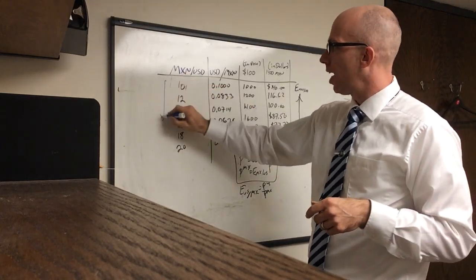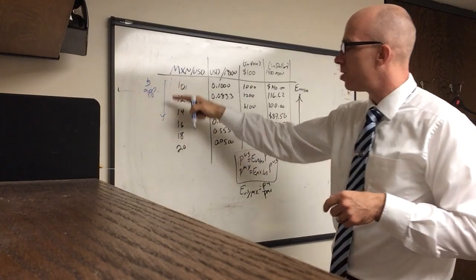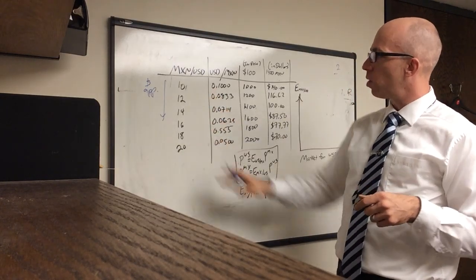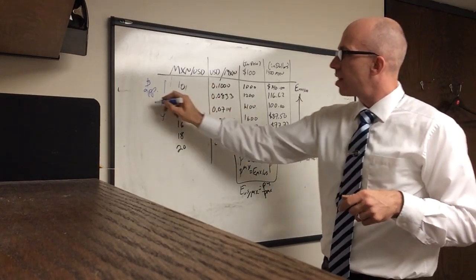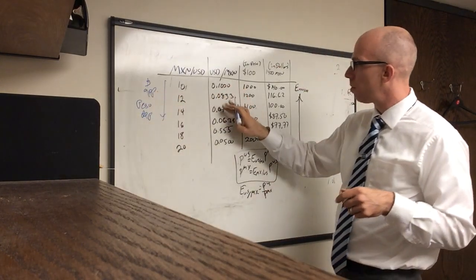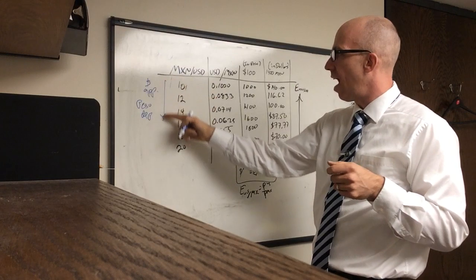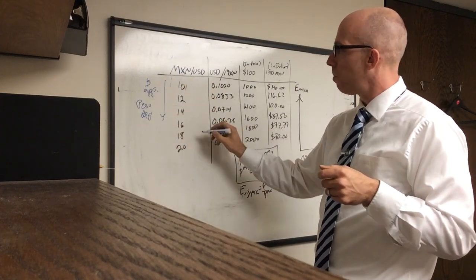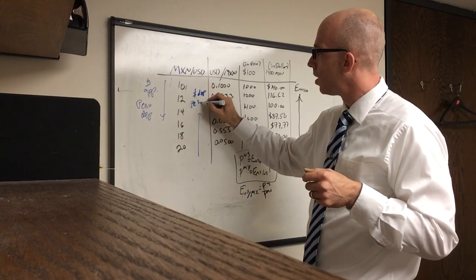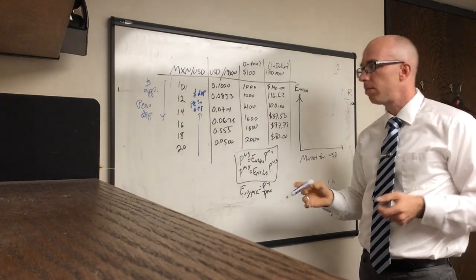If you go down the column, you can see that $1 is appreciating — the dollar is gaining in value, buying more and more pesos. At the same time, the peso is depreciating, and 1 peso is losing value. As one number grows, its reciprocal must shrink and vice versa. So going down means dollar appreciation and peso depreciation; going up means the dollar is depreciating and the peso is appreciating. They go in opposite directions because they're simply the inverse of each other.